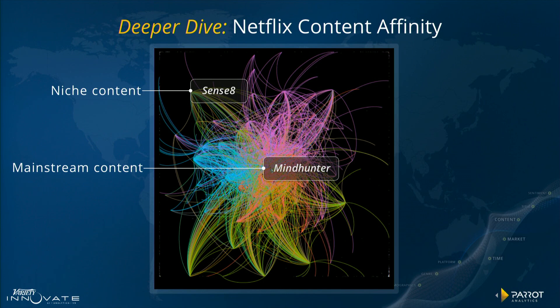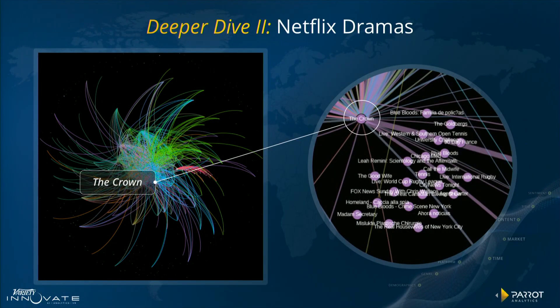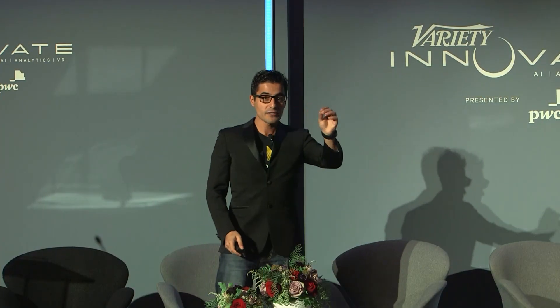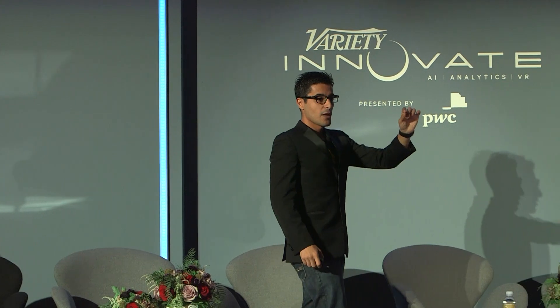You can drill down deeper and deeper. You can say, I want to highlight just Netflix content — understand the relationship between Mindhunter and Sense8, understand just how niche an audience Sense8 targets versus how wide a streaming audience Mindhunter targets. And now zooming into The Crown — it turns out that the fans of The Crown are really into their rugby, their tennis, and Fox News. By understanding consumer behavior — what content people watch, what they consume, what they search for, what they critique, what they rate — and having a global measurement system that classifies and standardizes all of that, we can start to uncover these relationships.